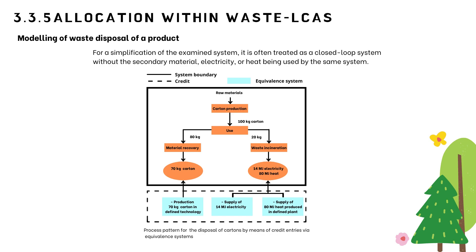Since the base system makes available 70 kg of cardboard via material recovery, the production of 70 kg cardboard from raw materials can be avoided. Thus, the load of producing 70 kg cardboard from raw materials is subtracted from loads of the base system. Since the base system generates 14 MJ electricity by incineration, the environmental loads for an electricity supply of 14 MJ are credited to the base system. Likewise, 80 MJ heat from incineration is credited via an equivalent system—for example, heat supply by incineration of light fuel oil. A credit entry through equivalent systems is widely applied.